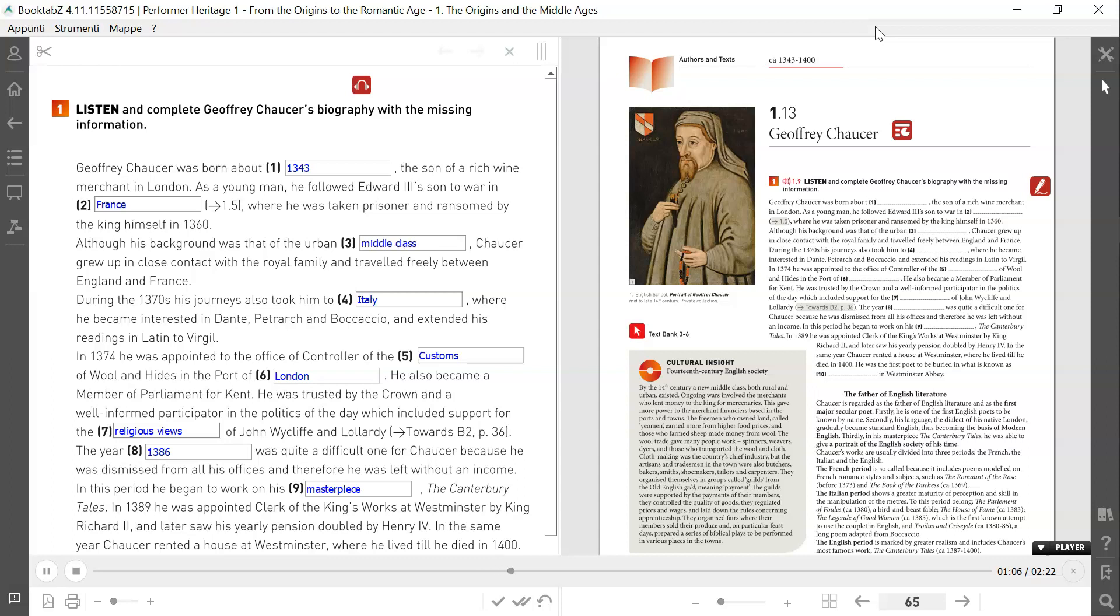In 1374, he was appointed to the Office of Controller of the Customs of Wool and Hides in the Port of London. He also became a Member of Parliament for Kent. He was trusted by the Crown and a well-informed participator in the politics of the day, which included support for the religious views of John Wycliffe and Lollardy. The year 1386 was quite a difficult one for Chaucer, because he was dismissed from all his offices and therefore he was left without an income.